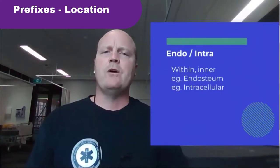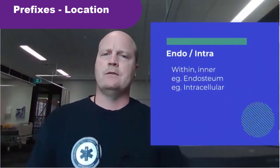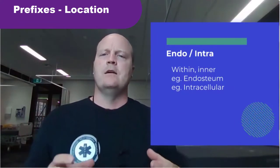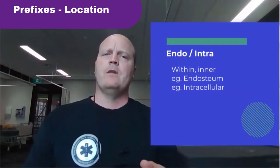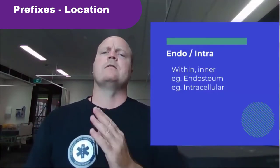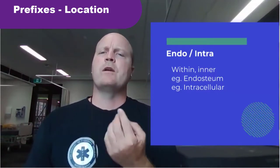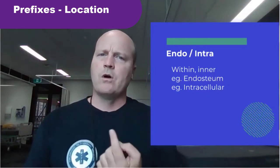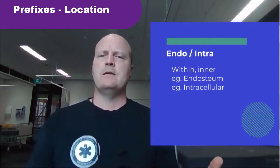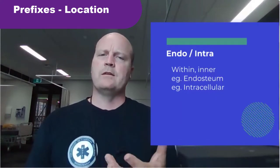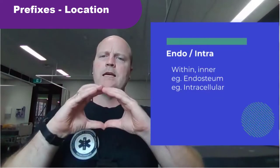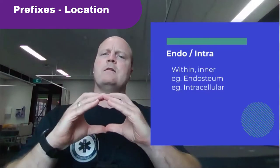Next up we've got endo and intra. Endo and intra mean within or inner. So endosteum — osteo is bone — the endosteum is like a glad-wrap covering that wraps on the inside of long bones. And then intracellular — intra means within, so intracellular is referring to anything that's inside a cell.